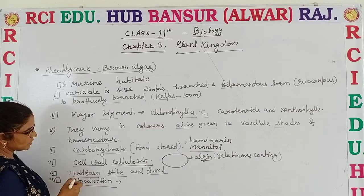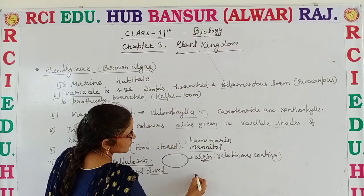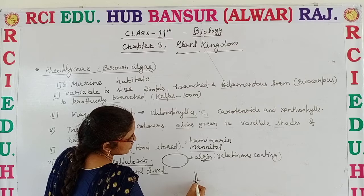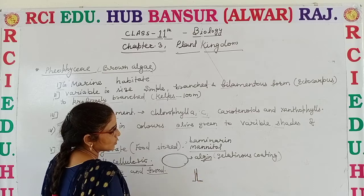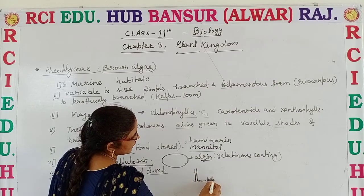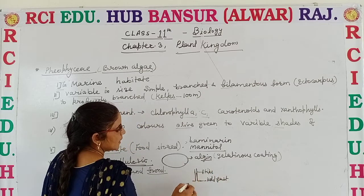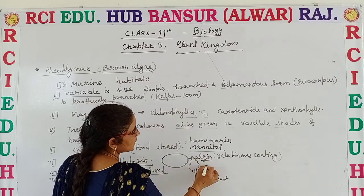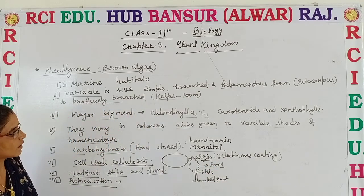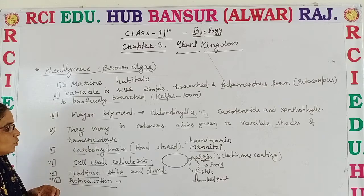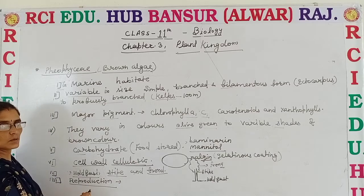The plant body or thallus is divided into three parts: holdfast, stipe, and frond. The plant body is attached to the substrate with the help of a holdfast. It has a stalk-like structure — not a true stalk, but a stalk-like structure — that is known as the stipe. The leafy portion, or the photosynthetic part, is known as the frond.